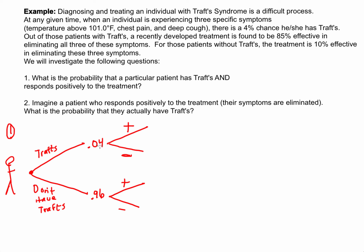If the person has Traff's, the treatment is found to be 85% effective, so the probability of them getting better is 0.85, and consequently 15% will not get better, giving 0.15. Down below, for those patients who don't have Traff's, the treatment is 10% effective. So there's a probability of 0.10 that someone without Traff's has a positive result, and therefore 0.90 — or 90% — respond negatively.